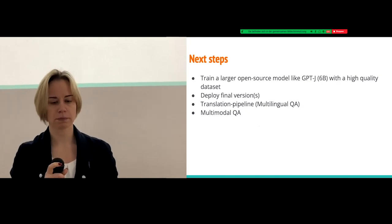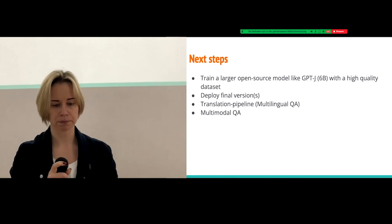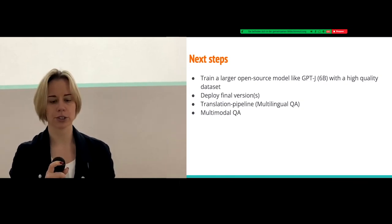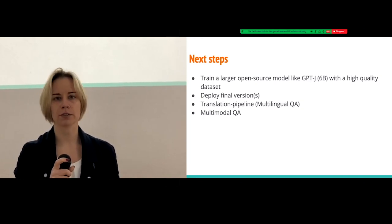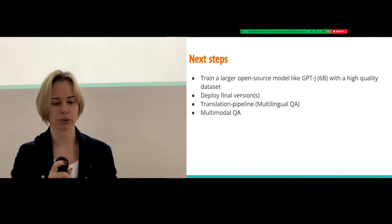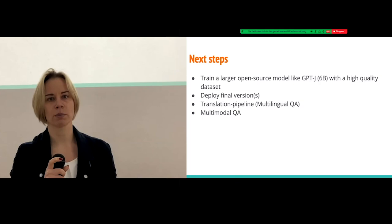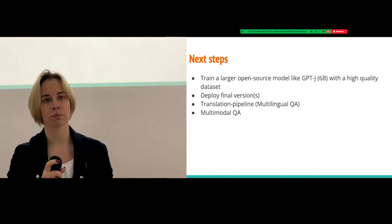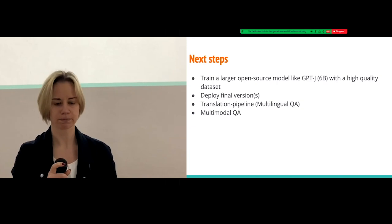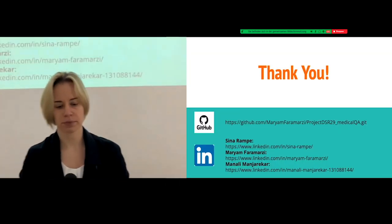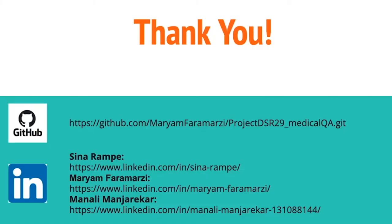Our next steps is we want to really train a larger open source model like GPT-J with 6 billion parameters. And we're very curious about the outcome. We also want to deploy our application, how it is now. And another idea is to implement a translation pipeline. So the app is available in many different languages. And another cool idea is to implement, for example, a feature that you can upload pictures and get an estimate. So you're very welcome to have a look at our GitHub repo or also on our LinkedIn profiles. And thank you very much for your attention.